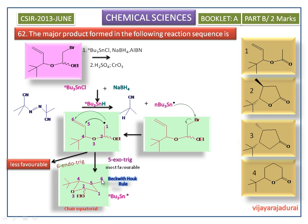In the product, the tertiary butyl group and methyl group are trans to each other. Specifically, the tertiary butyl group is in the equatorial position and the methyl group is in the axial position — that is, one is in the upward direction and the other is in the downward direction. So the substituents are trans to each other, and according to Beckwith-Hogg, the reaction gives predominantly the trans product.